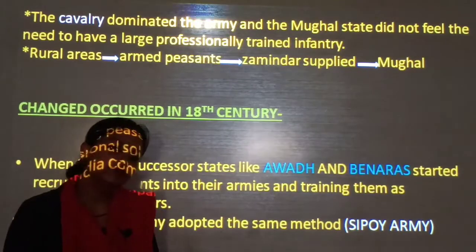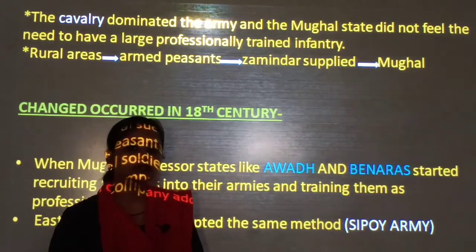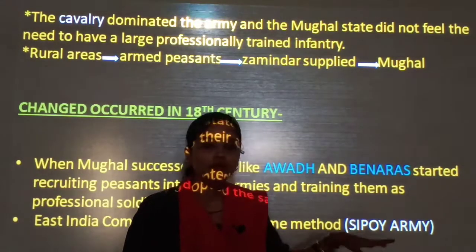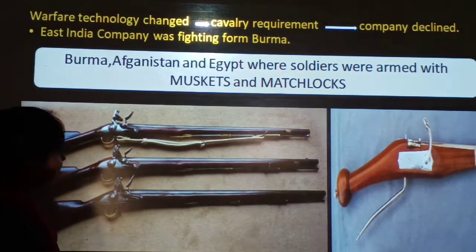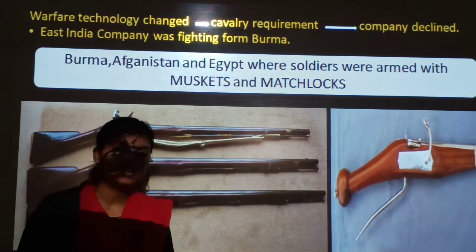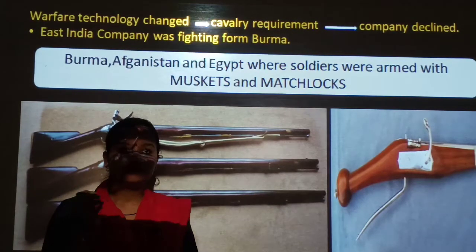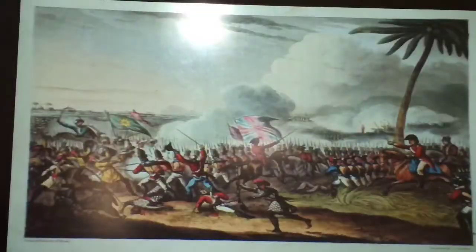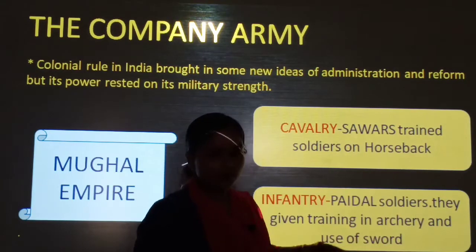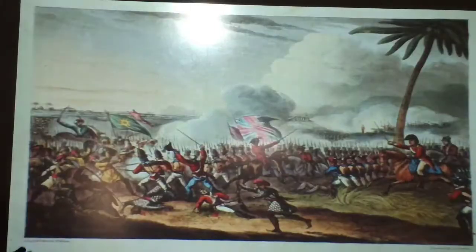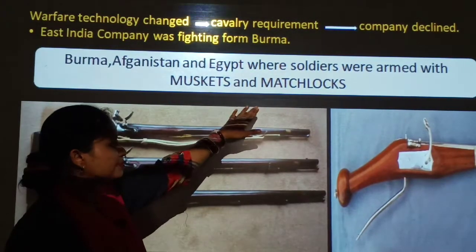The infantry army was now being trained. These trained soldiers were called the Sipoy — a term used for a soldier in Hindi, also known as 'Sepoy.' Now, technology changed. Previously the infantry was trained in archery and sword use, but now the technology changed and they used muskets and matchlocks.